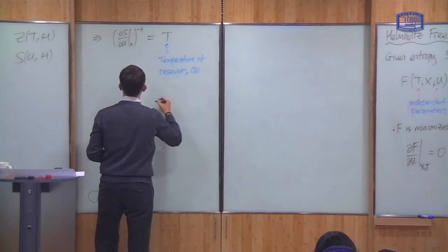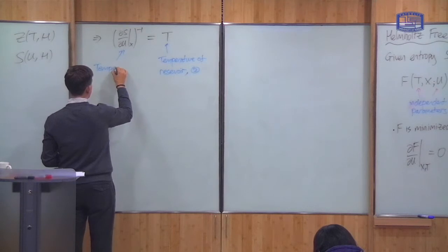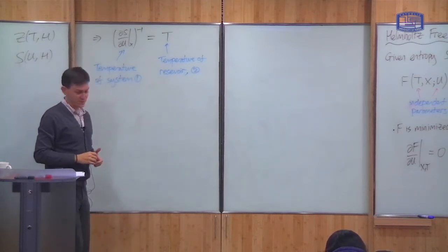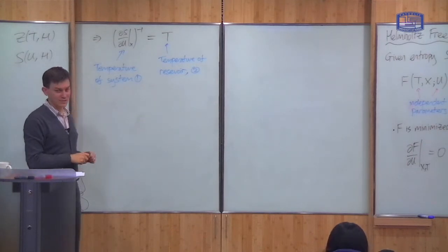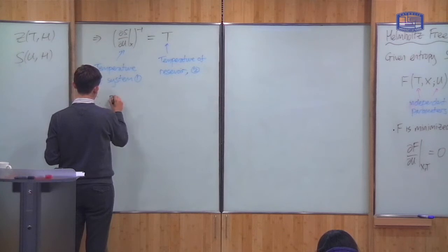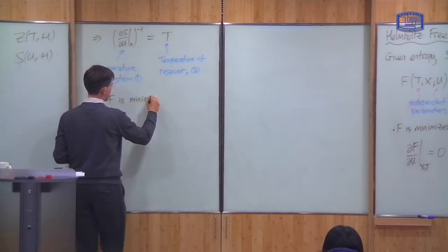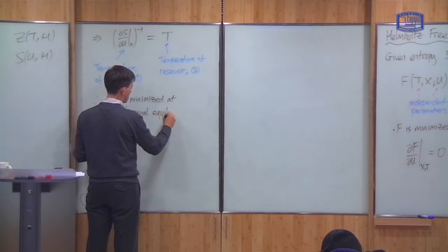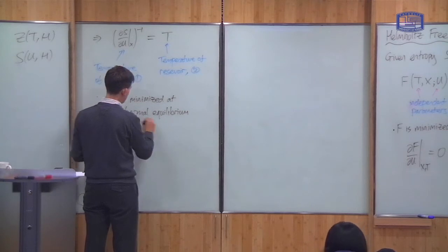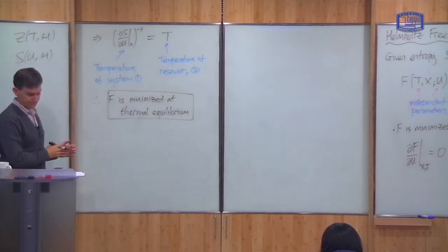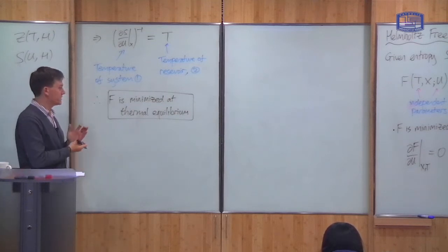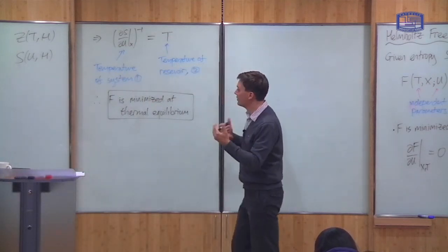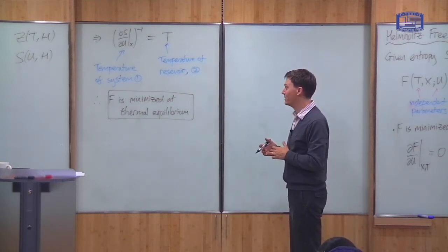This T is the temperature of the reservoir, which we called system number two before, and this one is the temperature of the first system. It was the definition of temperature. So you see that the function is minimized when the two systems are in thermal equilibrium. That's one useful property of this function F — its minimum corresponds to thermal equilibrium.